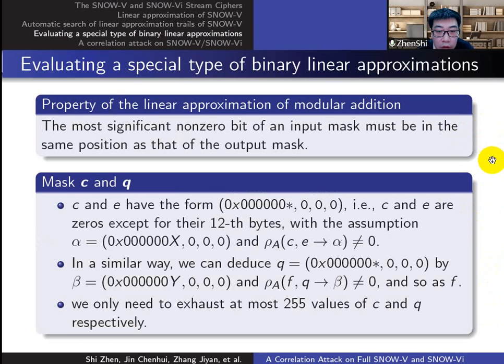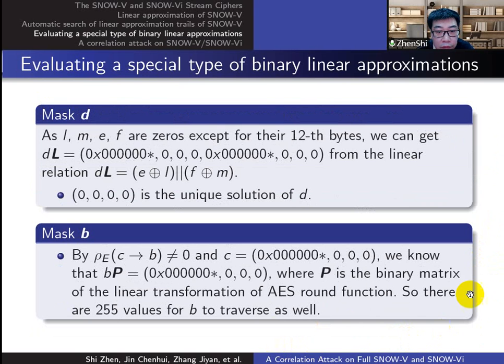By the property of modular addition, we can reduce the exhaust of C to 255, and so as A, B, and Q. For D, we proved 0 is the unique solution.